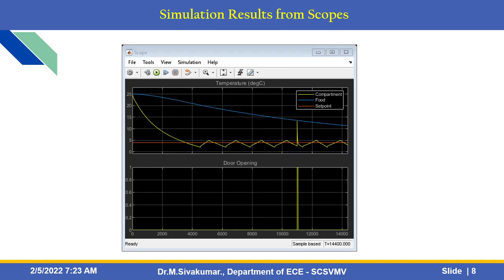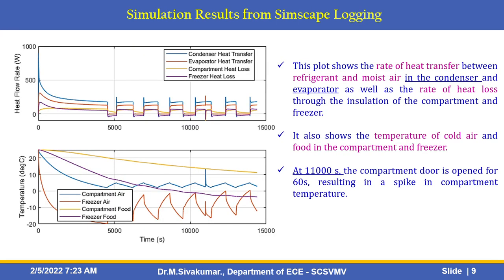This is a simulation result from scopes, showing temperature versus door opening at the time of door opening, along with compartment and food set point results in degrees. These results also show Simscape logging: a graph of time versus heat flow rate and time versus temperature, showing the rate of heat transfer between refrigerant and moisture in the condenser and evaporator, as well as heat loss through insulation of the compartment and freezer.